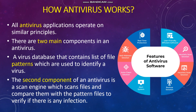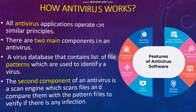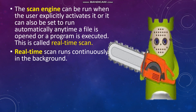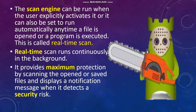The second component of an antivirus is a scan engine, which scans files and compares them with the pattern files to verify if there is any infection. The scan engine can be run when the user explicitly activates it, or it can be set to run automatically anytime a file is opened or a program is executed. This is called real-time scan. Real-time scan runs continuously in the background.